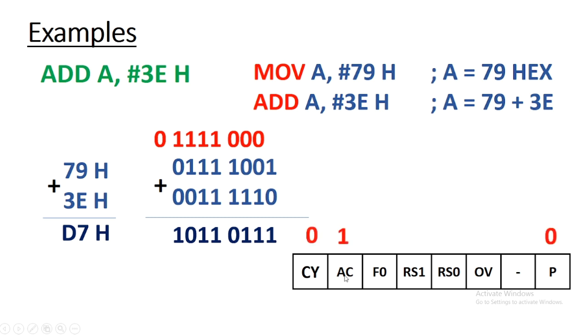Because no carry is generated, carry flag would be 0. Auxiliary carry flag is 1 because there is a carry from lower nibble to higher nibble.